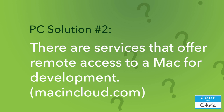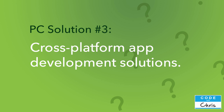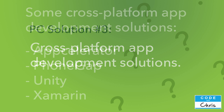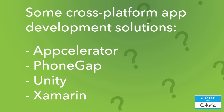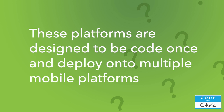And lastly, another set of solutions are cross-platform tools available on the PC. Some of them are AppCelerator, PhoneGap, Unity, and Xamarin. These development environments are designed for you to write your code and build your app once, but then be able to deploy — and deploy is just a fancy word for export into an app — onto multiple platforms. That's why they're called cross-platform tools.